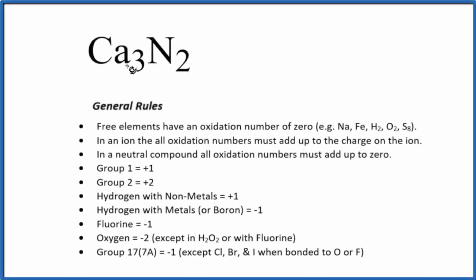To find the oxidation numbers for each element in Ca3N2, we'll use these general rules. The first thing to notice is there's no negative or positive sign after the calcium nitride. That means it's a neutral compound. All the oxidation numbers will add up to zero. That's very helpful.